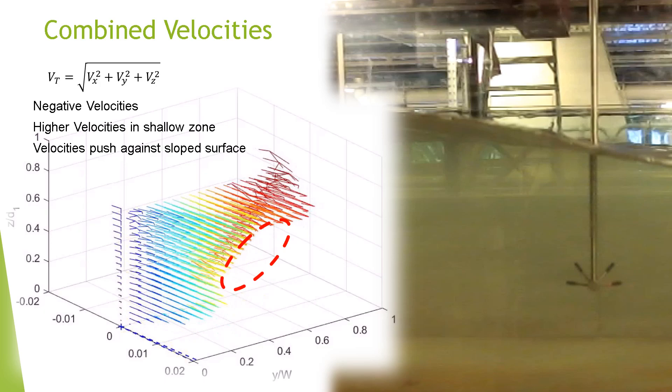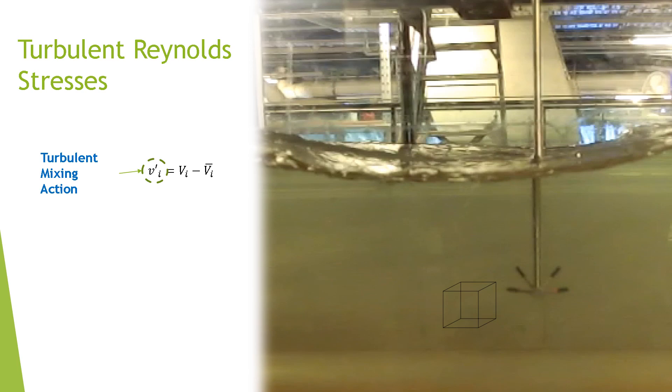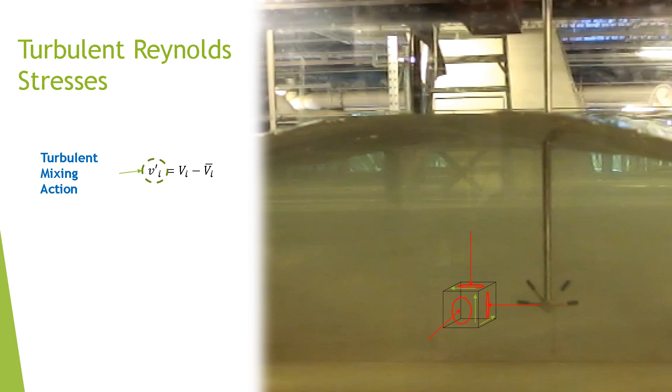Total velocity is comprised of a mean and fluctuating component. The fluctuating component is what drives momentum exchange and mixing. Looking at an infinitesimal particle, there are three normal and three tangential shear forces. These shear forces are a cross product of velocity fluctuation.